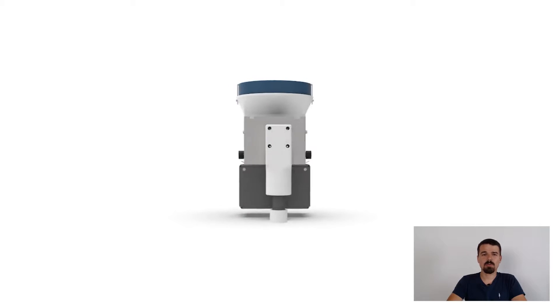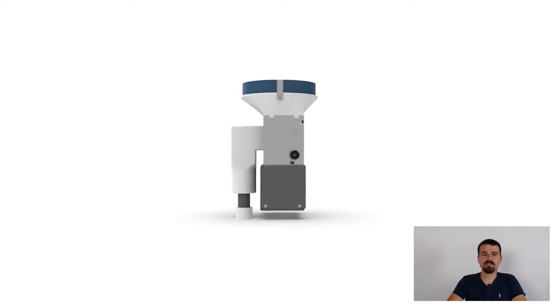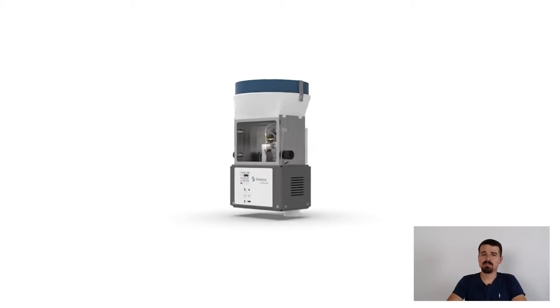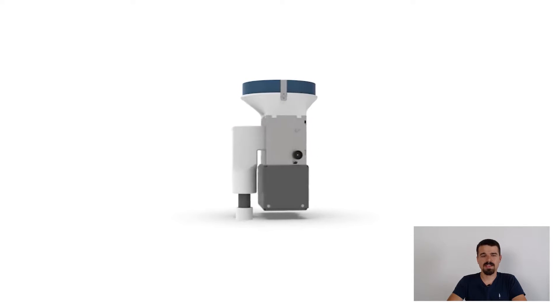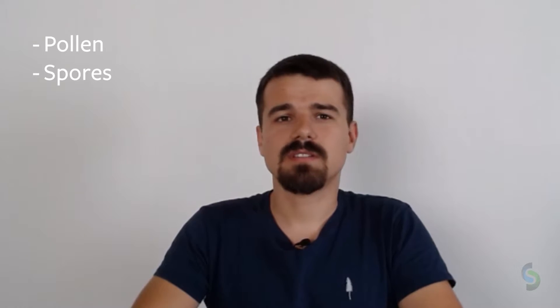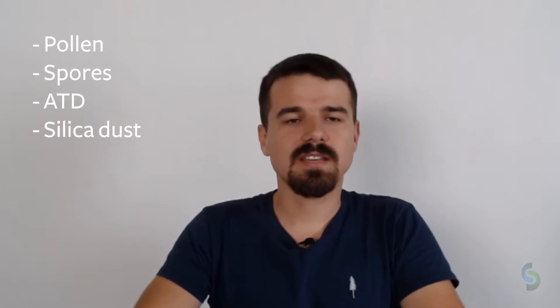The Swissens atomizer is the only compact and mobile particle disperser on the market. Through automation and remote controllability, it vastly simplifies the process of generating datasets, measuring particles, or just dispersing particles into the air. The Swissens atomizer was successfully tested with various materials like different pollen, spores, Arizona test dust, silica dust, various sizes of PS spheres, and many more. For us at Swissens, the atomizer is the helper for all aerosol particle generation tasks.